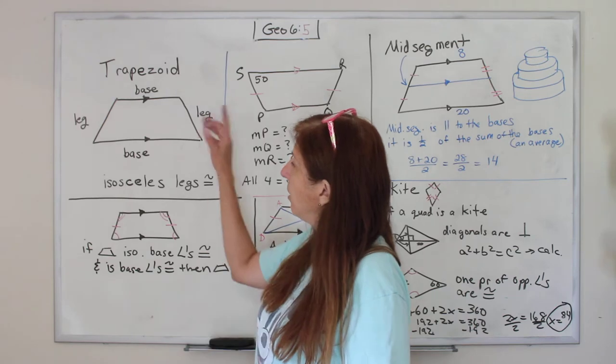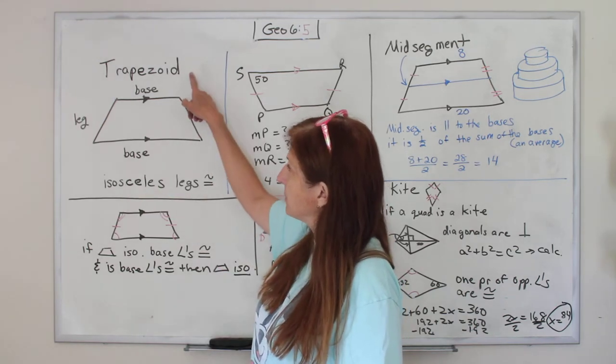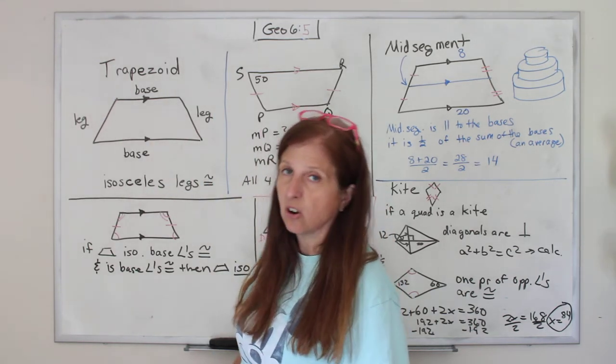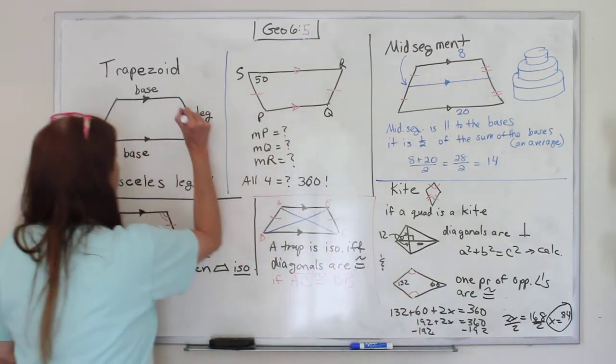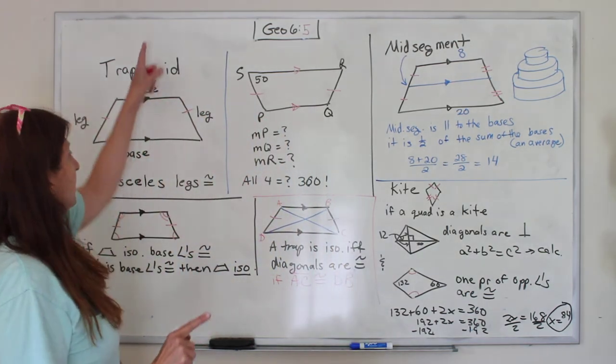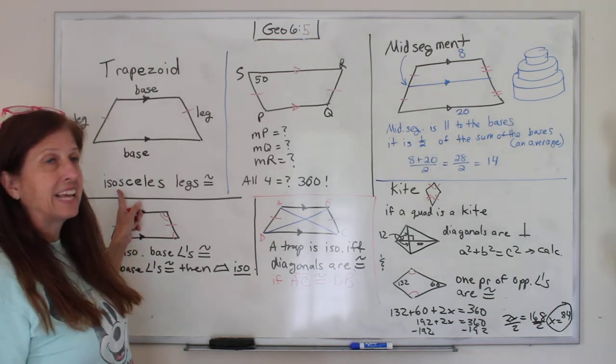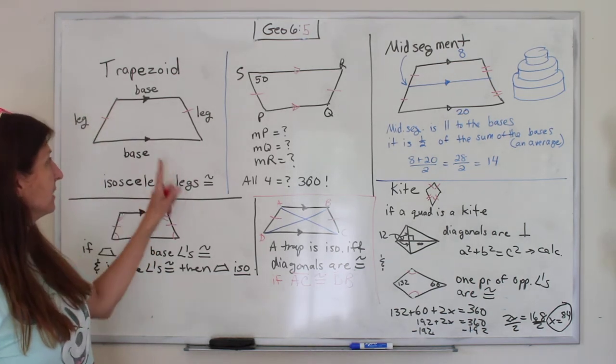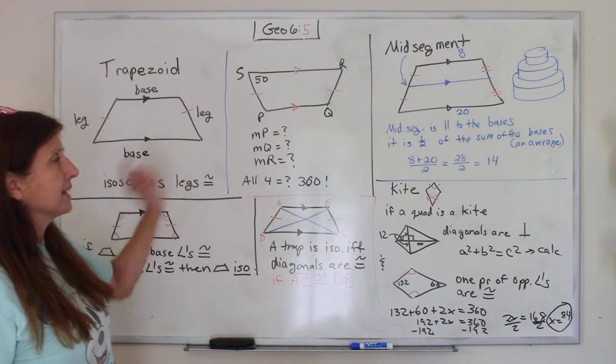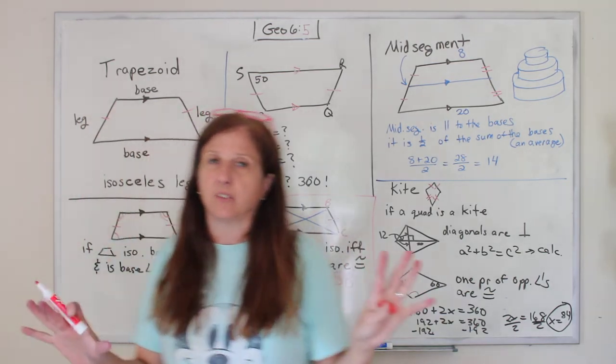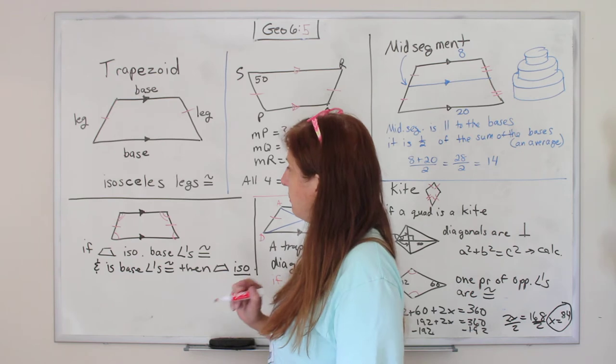It is called an isosceles trapezoid if its legs are congruent. So if they're the same, they don't have to be to be a trapezoid. But to be an isosceles, remember iso means same, so to be an isosceles trapezoid, the legs have to be congruent. The bases will never be congruent, but the legs have to be congruent.